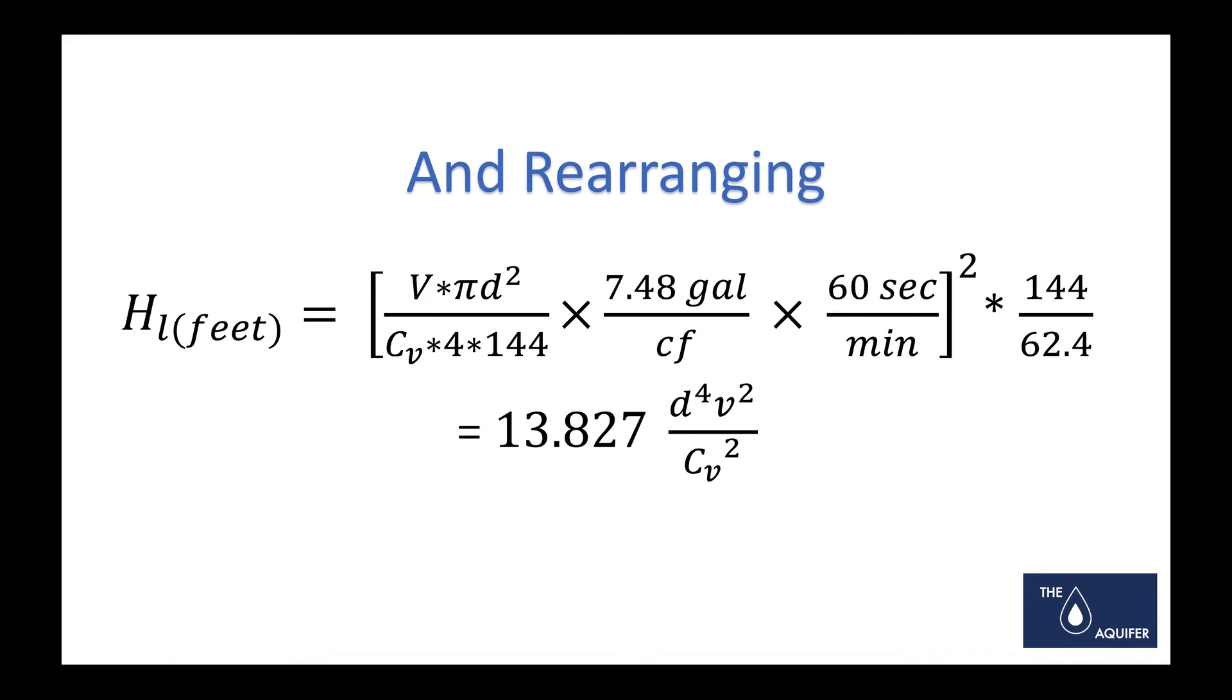Now we're going to go ahead and we're going to solve those equations for head loss in feet. Doing a lot of math and algebra here, we're going to come up with the relationship between head loss in feet and the diameter, the velocity of the flow, and the Cv. We've got this 13.827 factor out front, which is basically the product of pi and the numbers that are not variables here.